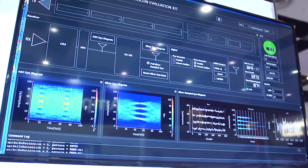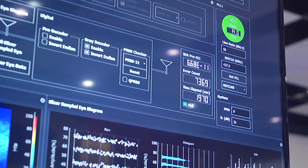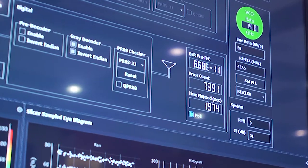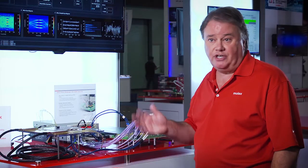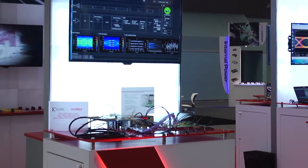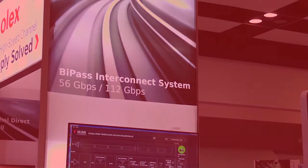Pre-FEC we're getting 10 to the minus 11 bit error rate. Normally, in order to meet the standards, you would expect that to be 5 minus 6, and we're getting 11 right off the bat without any effect whatsoever. So tons of margin in the channel, and that really is the biggest thing that bypass brings.